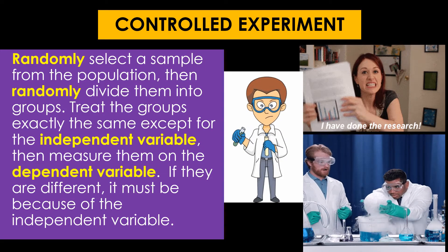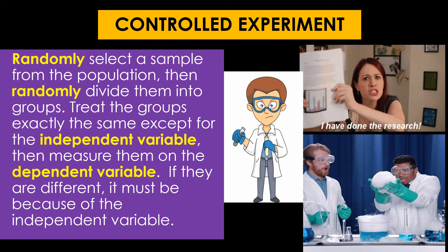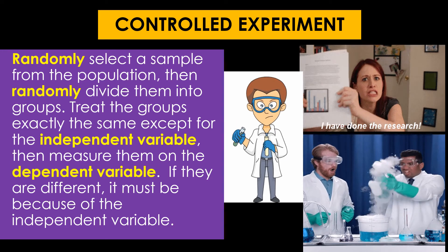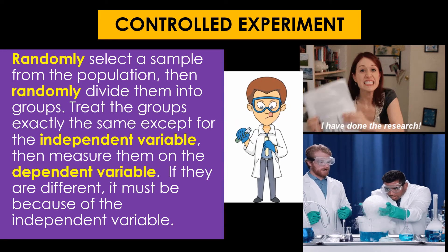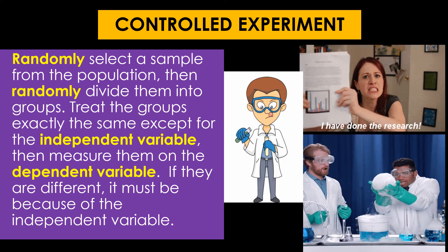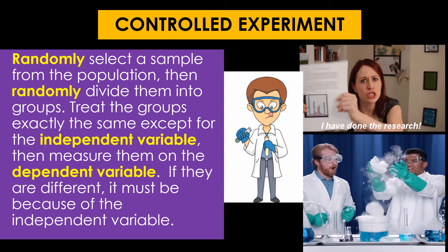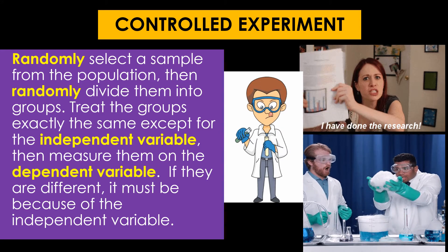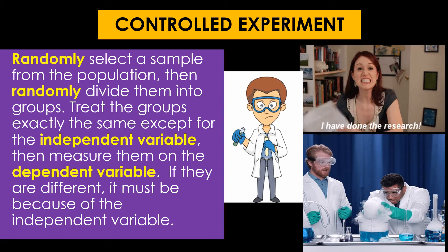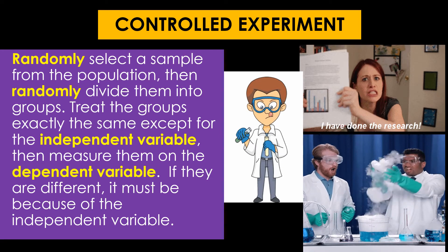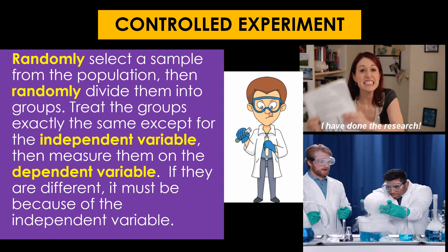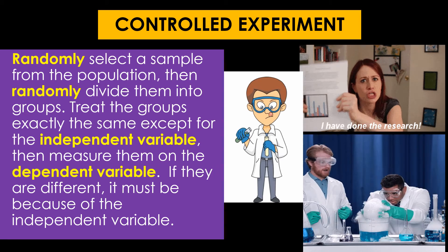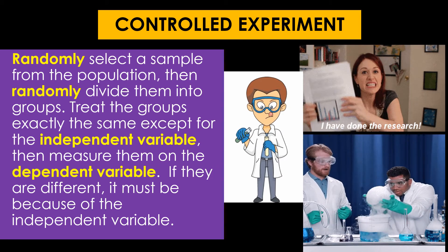To do a controlled experiment, you first get permission from an IRB if you're working with human subjects. Then you randomly select a sample from the population you're interested in, and randomly divide your sample into at least two groups. You treat the groups exactly the same except for one thing — the independent variable. The experimental group gets this treatment; the control group gets a fake treatment called a placebo. Then at the end, you measure them on the dependent variable. If the two groups differ, because they were treated exactly the same in every way except the independent variable, we assume the independent variable caused the difference.